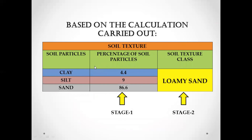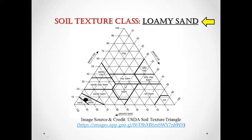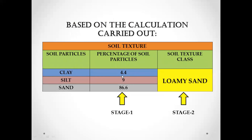Similarly, if your point of intersection of the three lines falls in a different area of the diagram, you will get a different soil texture class. This is how you determine the soil texture following these two steps.